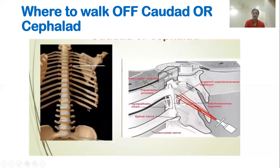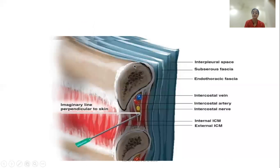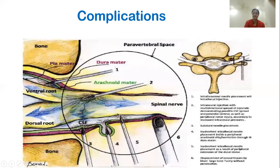Where to walk — caudad or cephalad? This picture shows that if you go cephalad, the pleura is very close to the paravertebral space, because in the wedge-shaped space, the more lateral you go, the closer the pleura is in the cephalad region. Therefore it is better and safer to walk caudad to enter the paravertebral space. For both procedures, you enter perpendicular — if you go too medially, you enter the CSF, the intradural space, or the dural cuff, causing total spinal or high spinal, and bilateral epidural blocks are also possible. Use a blunt needle.